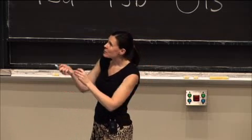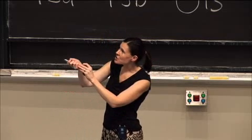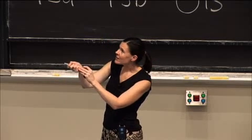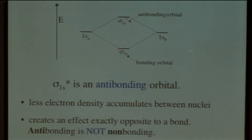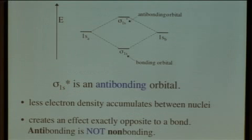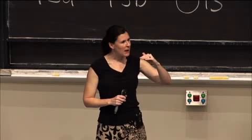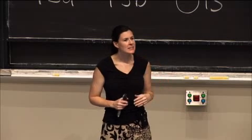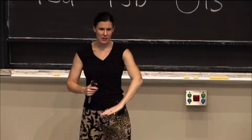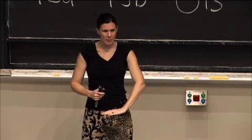We can see that just by looking at this picture. Here's bonding and here is non-bonding. Antibonding is even higher in energy than non-bonding. The energy that an antibonding orbital is raised by is the same amount as a bonding orbital is lowered by.